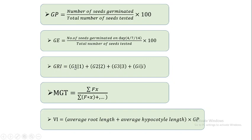The third one is germination rate index. This is equal to: number of seeds germinated on the first day divided by day one, plus number of seeds germinated on day two divided by day two, plus number of seeds germinated on day three divided by day three, and so on. This summation gives you the germination rate index.